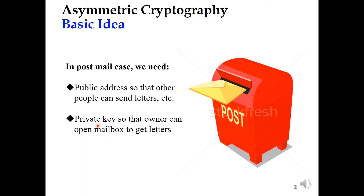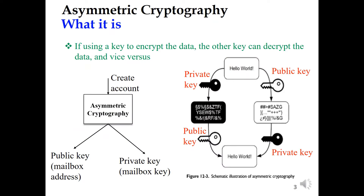And then there is a private key so that the owner can open the mailbox to get the letter inside. So in this case, if anyone keeps the private key, they can open the mailbox to see the content inside. It means that you are the owner of this letter. Similarly to this idea, asymmetric cryptography is used in blockchain to protect the ownership relationship.